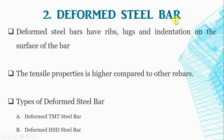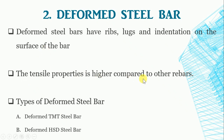Deformed Steel Bar: Deformed steel bars have ribs, lugs, and indentations on the surface of the bar, which reduces the major problem faced by the mild steel bar. Due to the elimination of slippage, good bonding is achieved between the concrete and rebar, and the tensile properties are higher compared to other rebars. These bars are produced in sections of 6 mm to 50 mm in diameter.